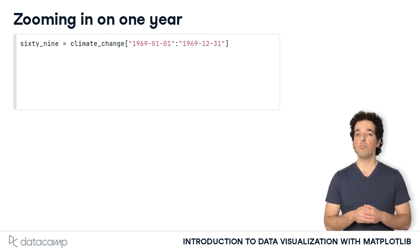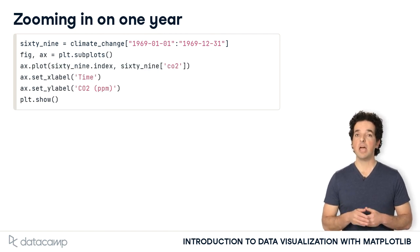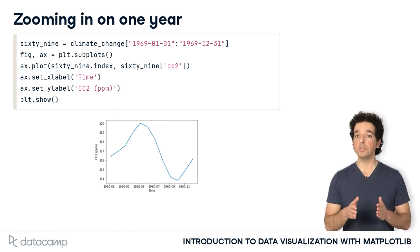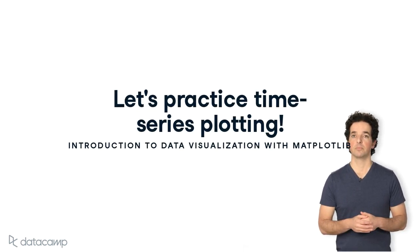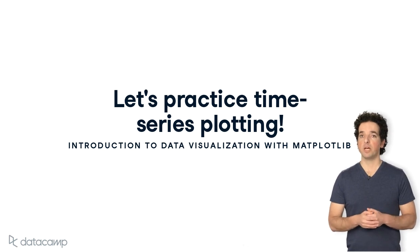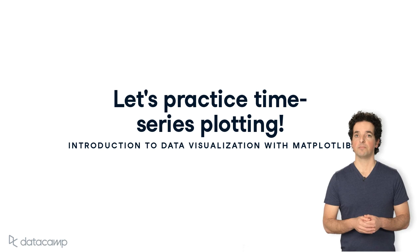Zooming in even more, we can select the data from one year. Now the x-axis automatically denotes the months within that year. Before moving on, let's practice indexing and plotting time series data.